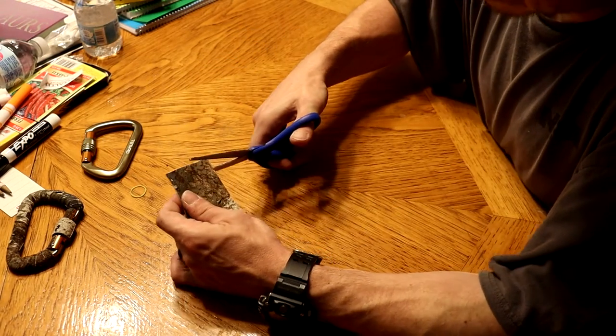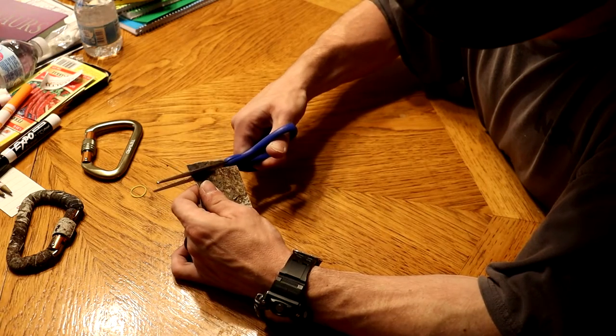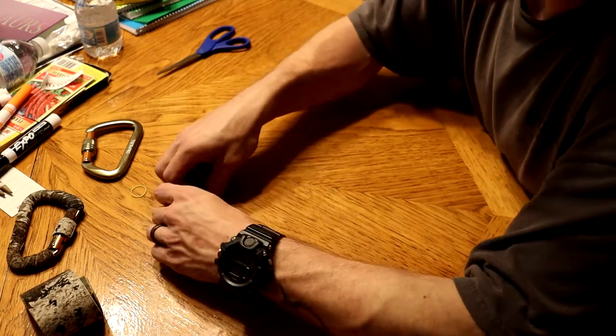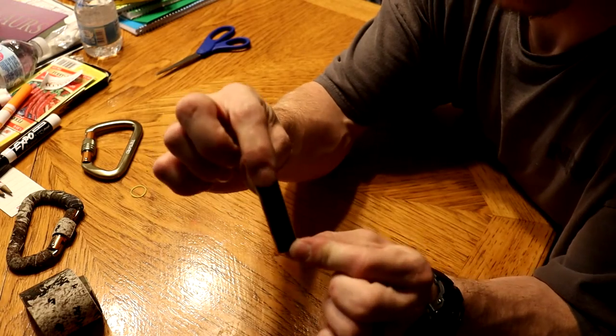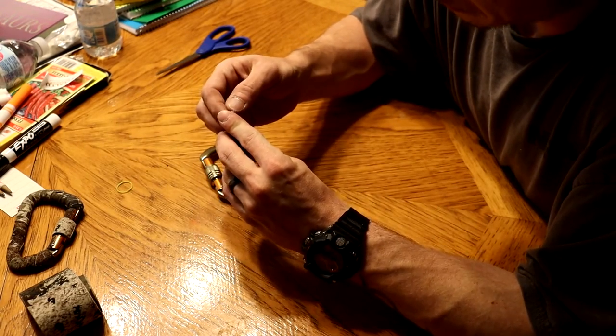So when you go to cut the piece off the stealth strip, you just want to grab a piece. And it doesn't necessarily have to be super super straight. But just grab you a piece like this, and then go ahead and peel your back off.